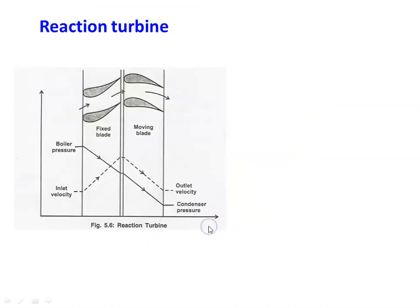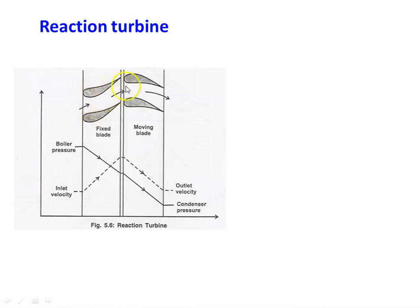In a single stage reaction turbine, it consists of fixed blade and moving blade. The blade shapes are symmetrical and equal, and this type of shape is called an aerofoil shape. The area between adjacent blades is initially higher; as the flow takes place, the area is decreasing and then increasing — so the flow passage between adjacent blades is something like a converging-diverging nozzle. Similarly in the moving blade, there is also a larger area, then converging area, then diverging area. So the space between adjacent fixed blades or adjacent moving blades acts as a converging-diverging nozzle.